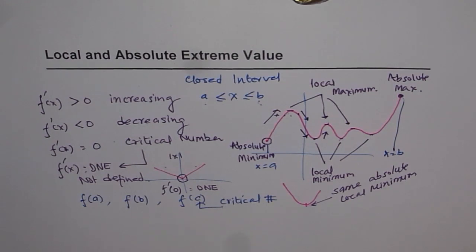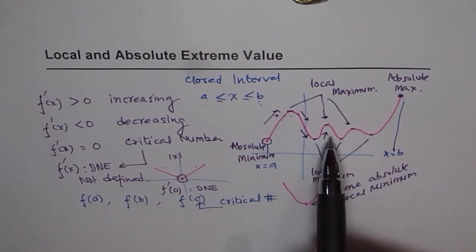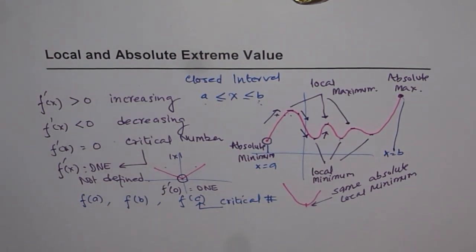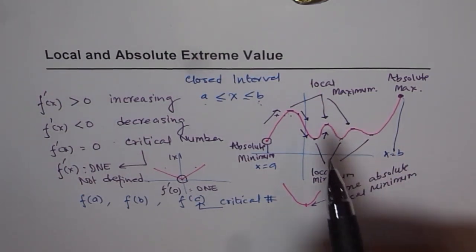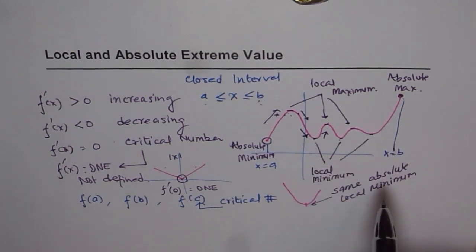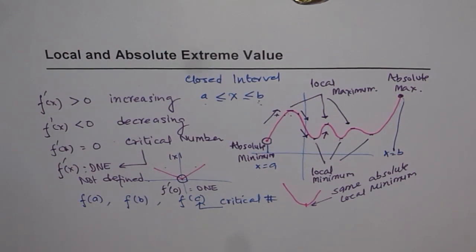What is the difference between local and absolute extreme values? First, you can have many local maximums and minimums, but there is only one absolute maximum and one absolute minimum. Second, local maximum and minimum occur only within a limited domain — in their own neighborhood — whereas absolute extreme values apply to the entire domain of the given function. We'll explore more about this topic in the upcoming videos.